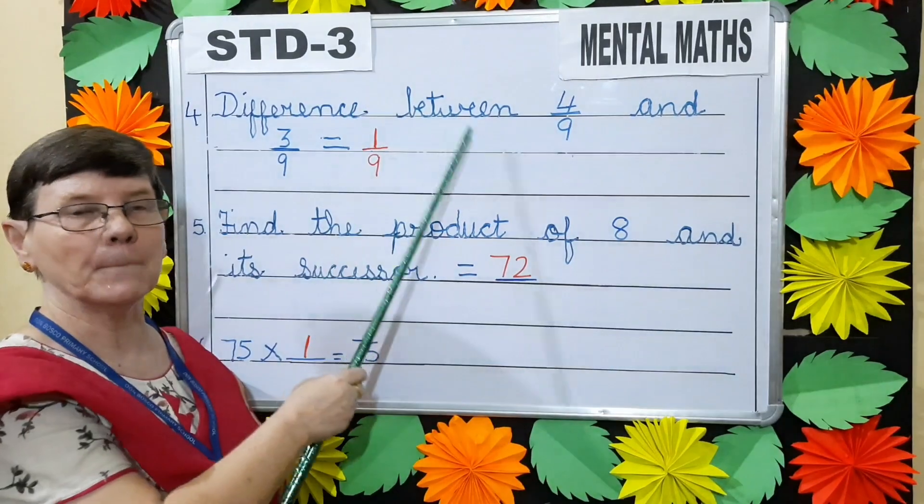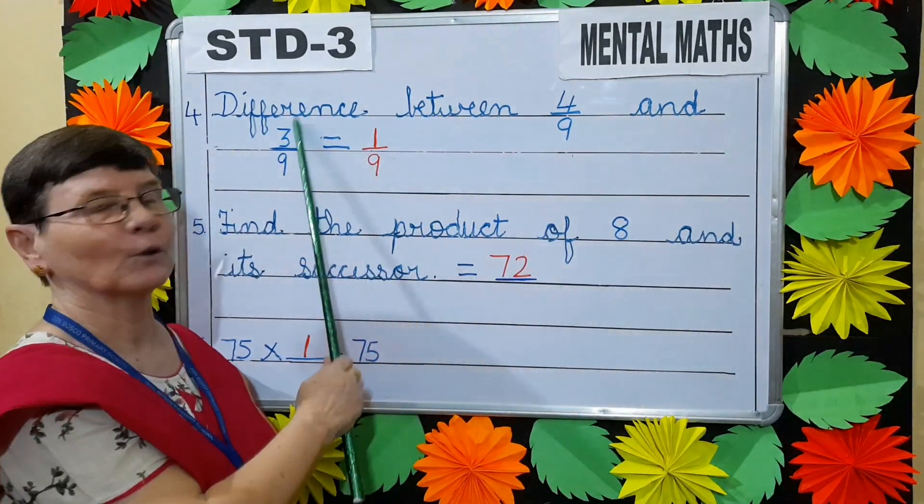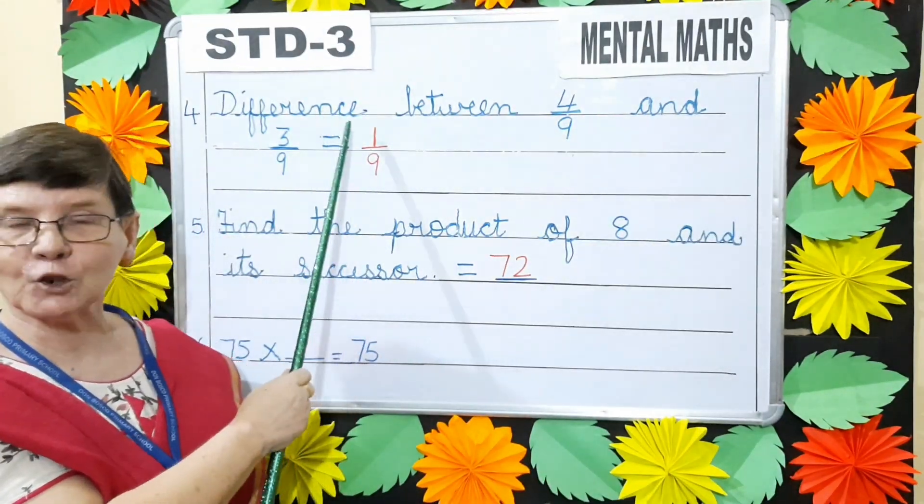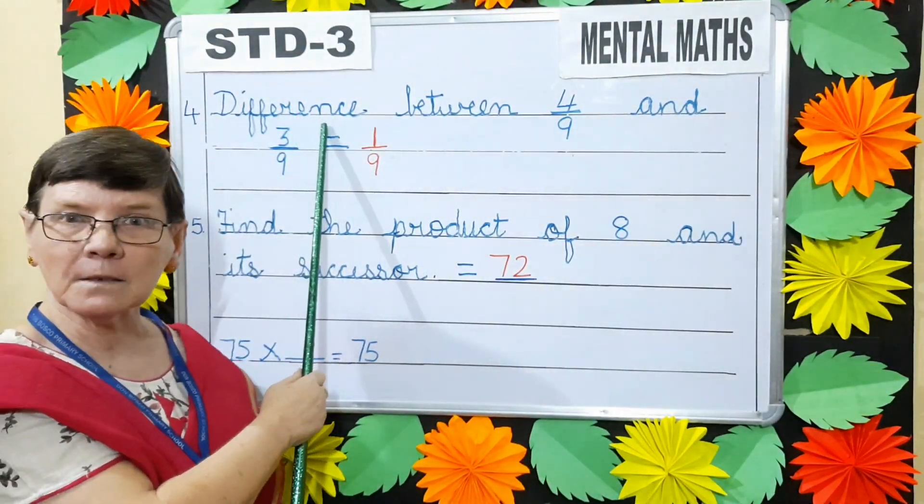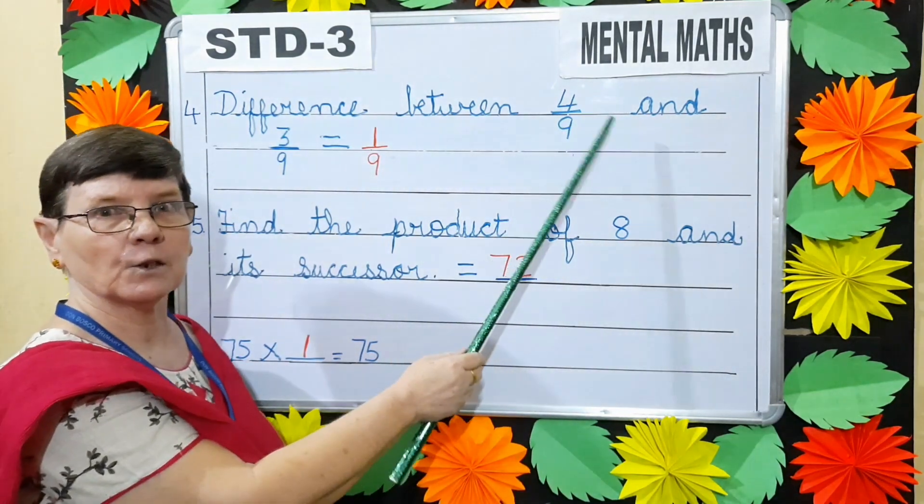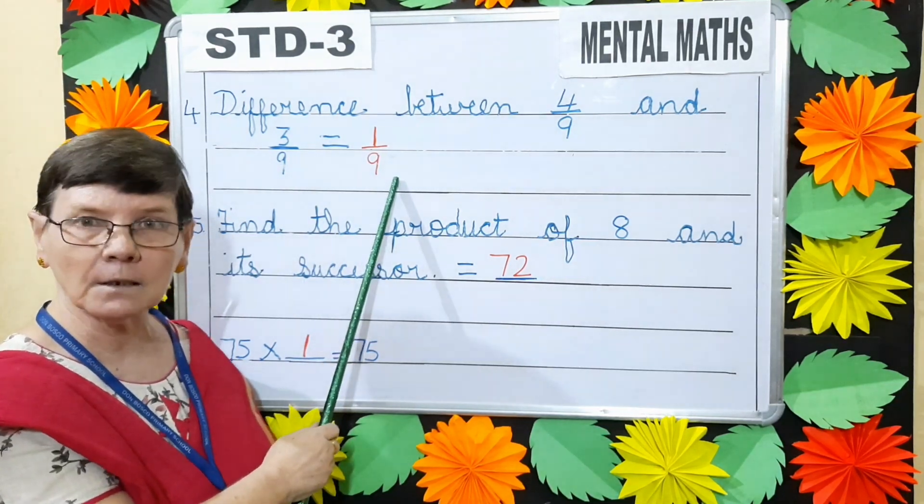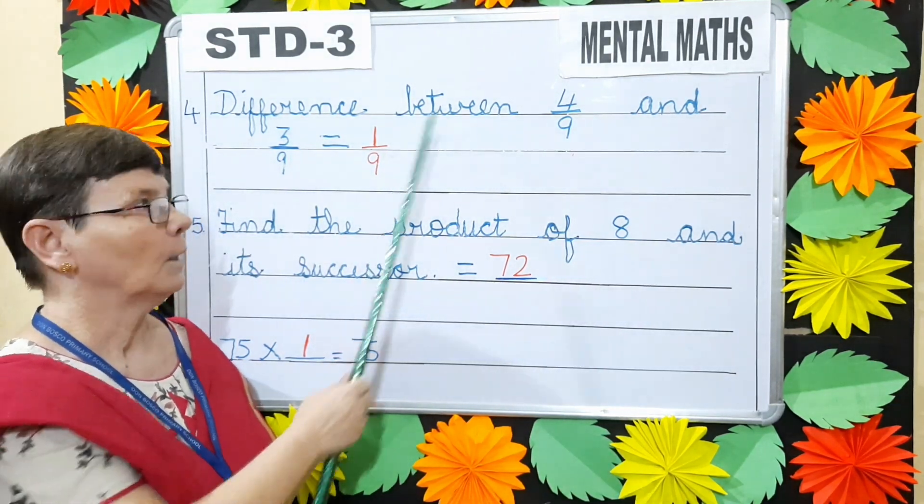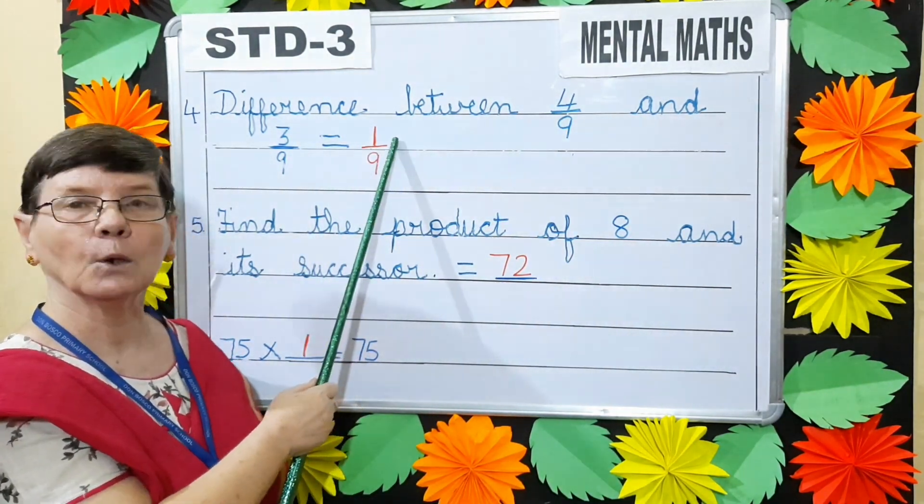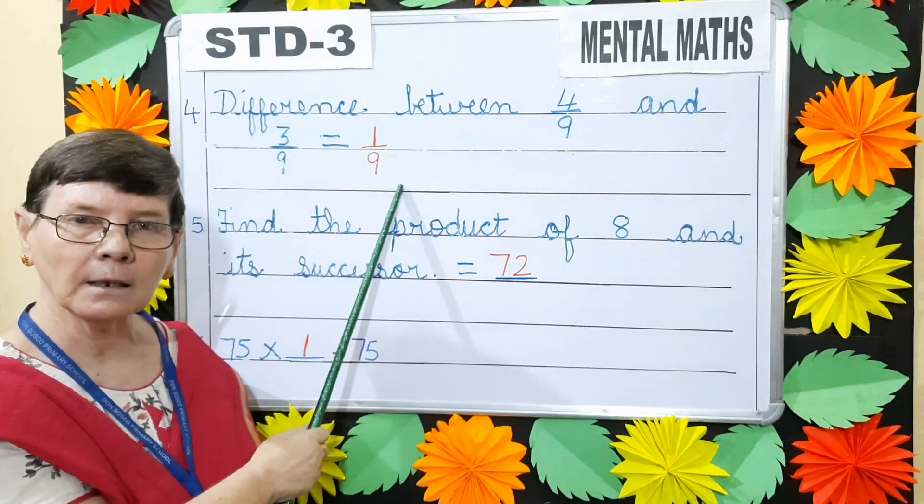Now here children, difference between 4 by 9 and 3 by 9 is equals to. Difference means subtract. Now in this question, you see both the denominators are 9. So we will write 9 as the denominator. Now 4 minus 3, you will get 1. So the answer is 1 by 9.